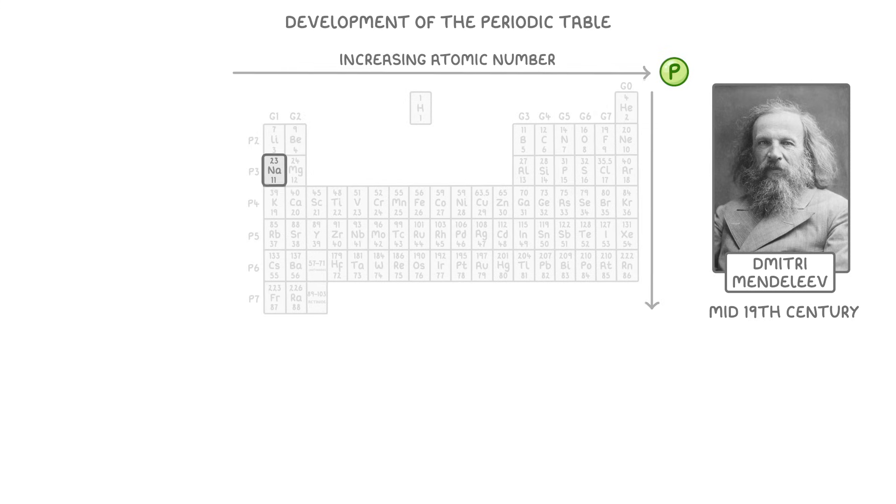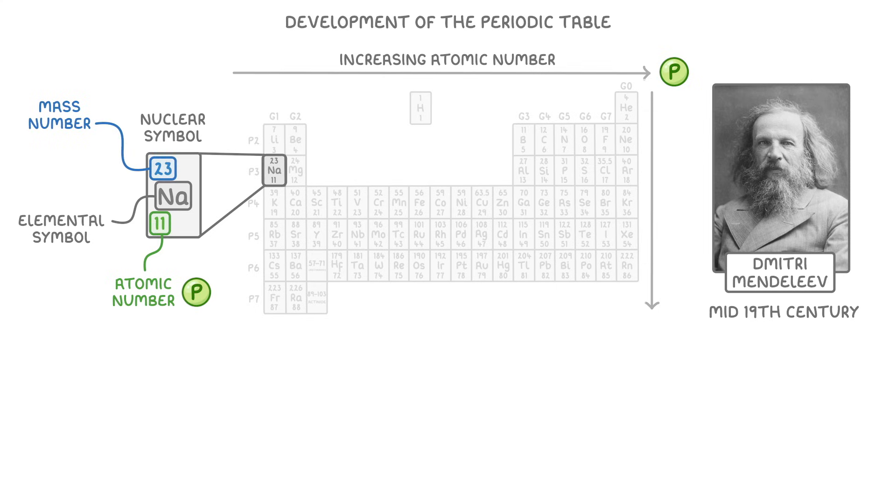Within each of these boxes is the nucleus symbol for that element, which has three components. On the right we have the elemental symbol, which is the one or two letter symbol for that element. In this case Na, which stands for sodium. In the bottom left we have the atomic number, which tells us how many protons the atoms of that element have. And in the top left we have the mass number, which tells us the total number of protons and neutrons in that atom.